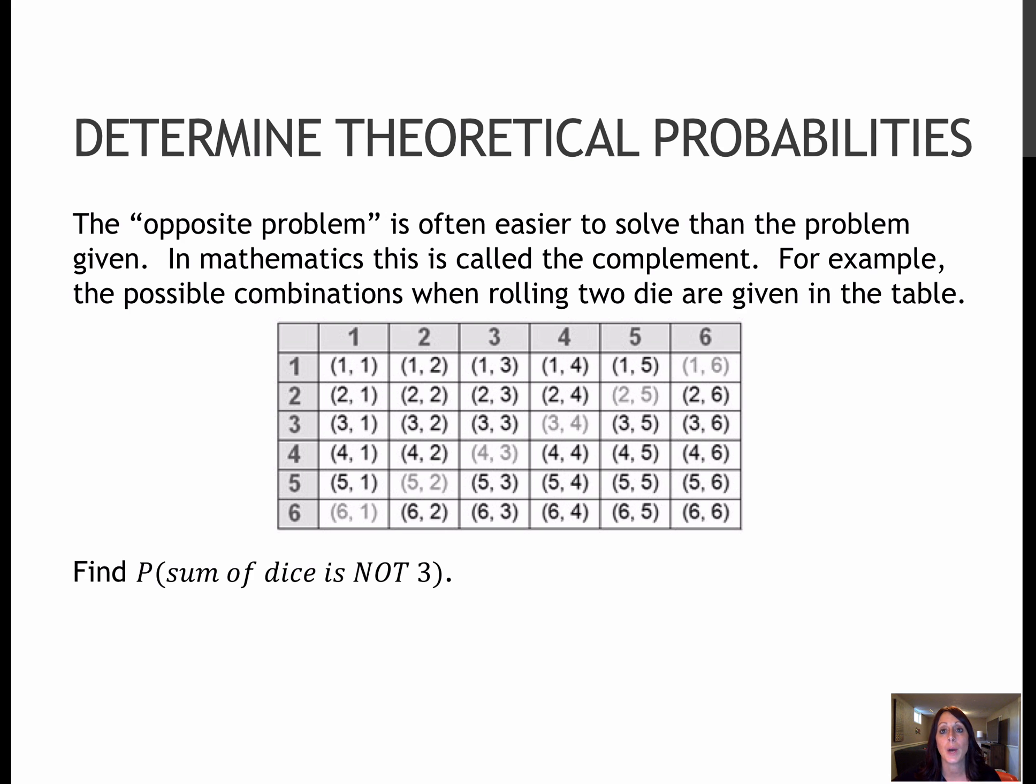Another thing about probability that I wanted to chat with you about was the opposite problem. So quite often we are asked to find something, and it's easier to find the probability of it not happening and then subtracting from 1, because we know that the probability of the entire sample space is 1. So in this question, for instance, we're asked to find the probability that the sum of the dice is not 3. So it might be easier to find 1 minus the probability that the sum is equal to 3.